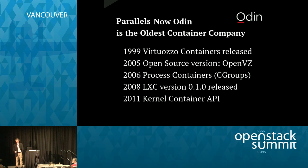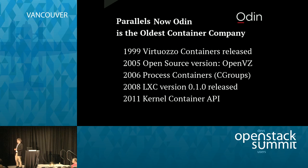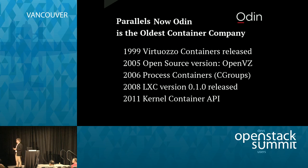In the past four or five days, you have heard a lot about containers. You should probably listen to me because Parallels, or actually now Odin, is the oldest container company in the world pretty much, depending on how you count. It's certainly the oldest company actually doing Linux containers. The company began life as SWSoft in 1999, dedicated to producing container technology for Linux. The first release was in 2001.